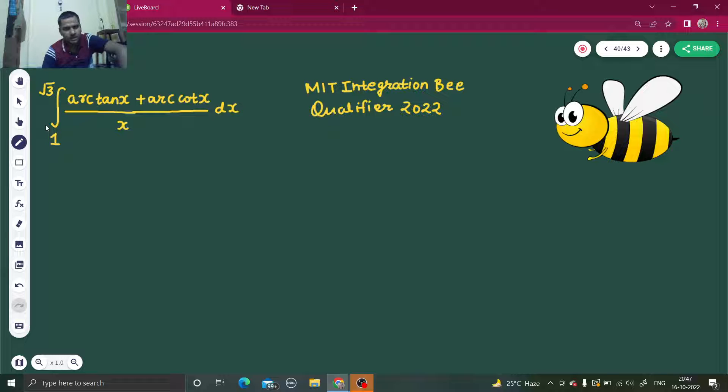Tan inverse x plus cot inverse x, we know, is equal to pi by 2. If we put this as pi by 2, we can take that pi by 2 out because that is a constant.